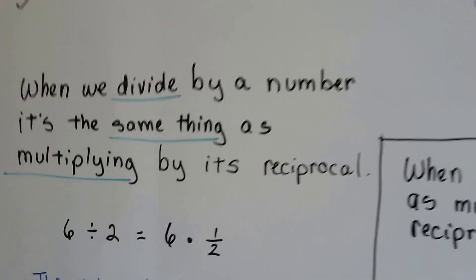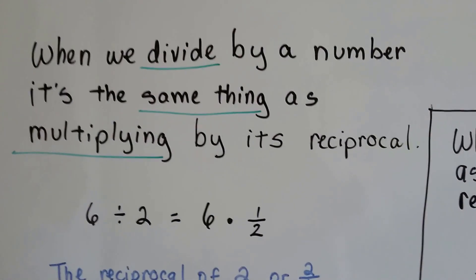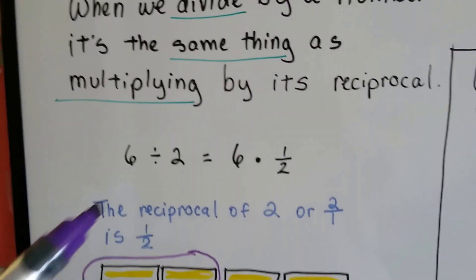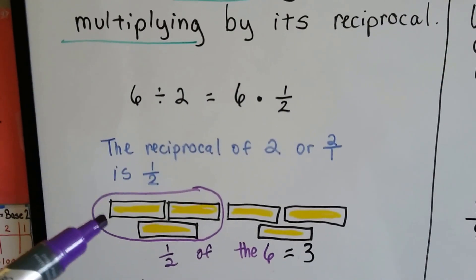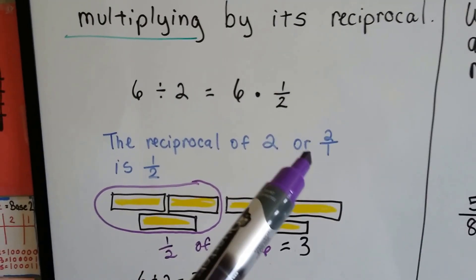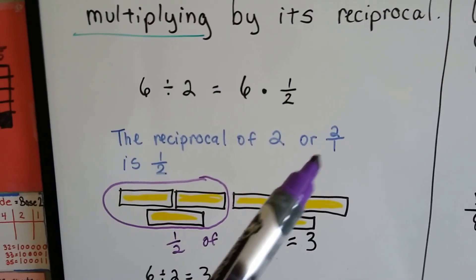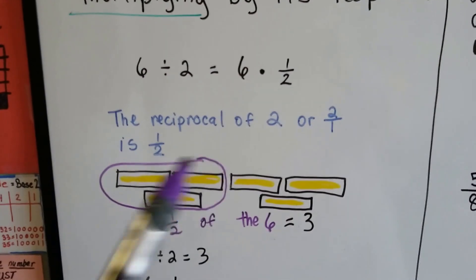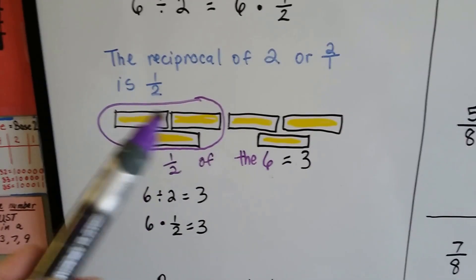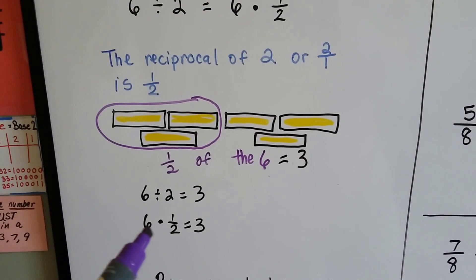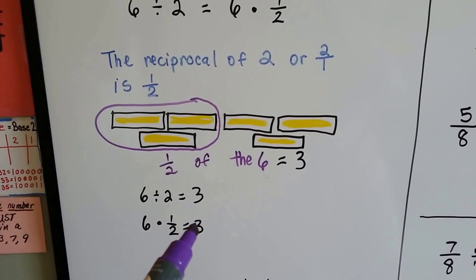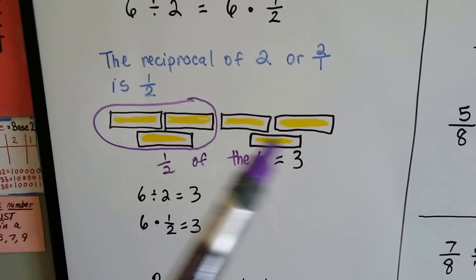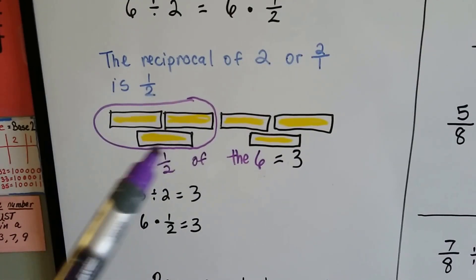That's how we divide. When we divide by a number, it's the same thing — it's multiplying by its reciprocal. 6 divided by 2 is the same thing as 6 times a half. The reciprocal of 2 — we can put it over a 1 to make it a fraction — so the reciprocal of 2 over 1 is a half. We flipped it upside down. 6 divided by 2 is 3, and 6 times a half is 3.